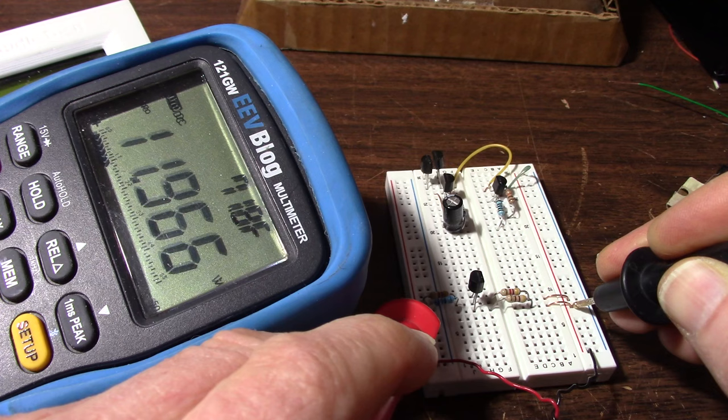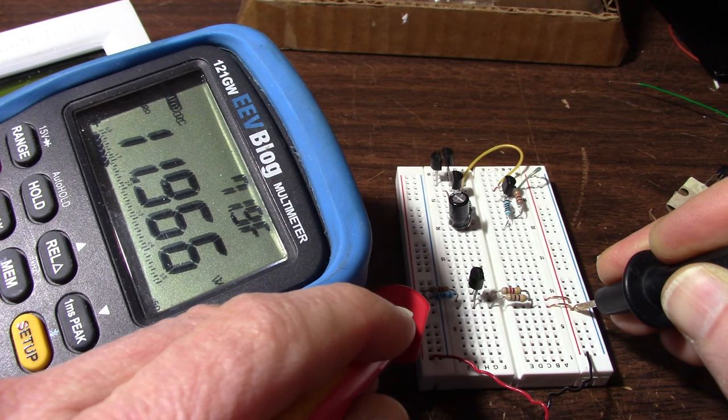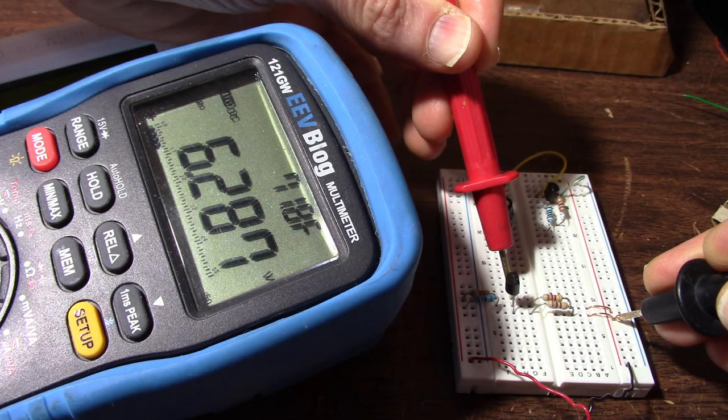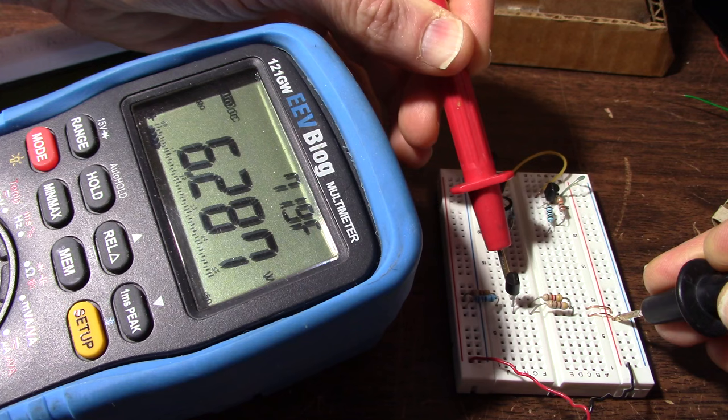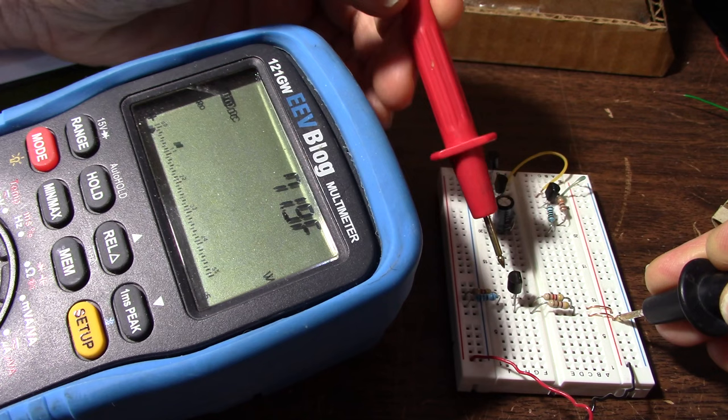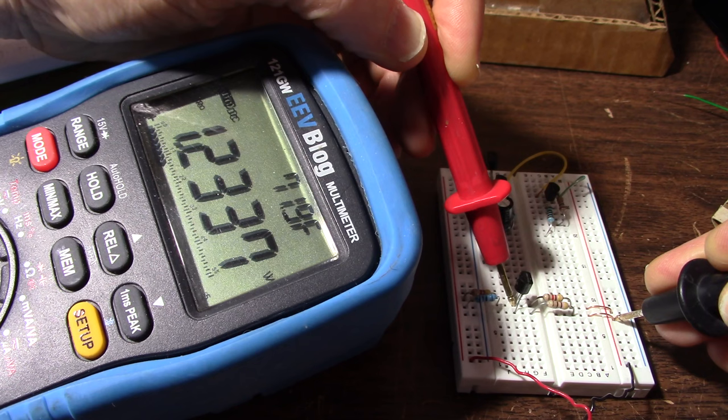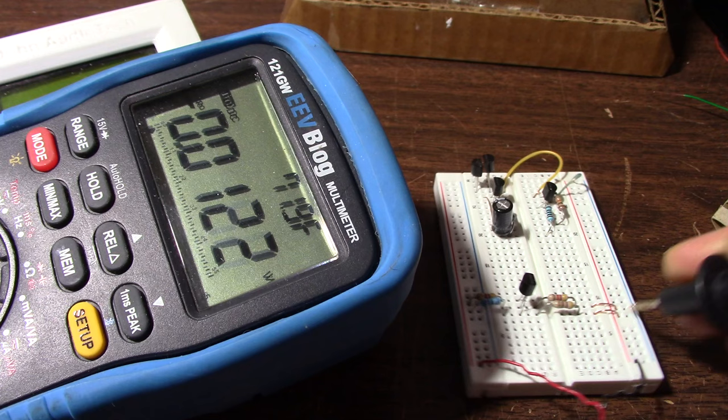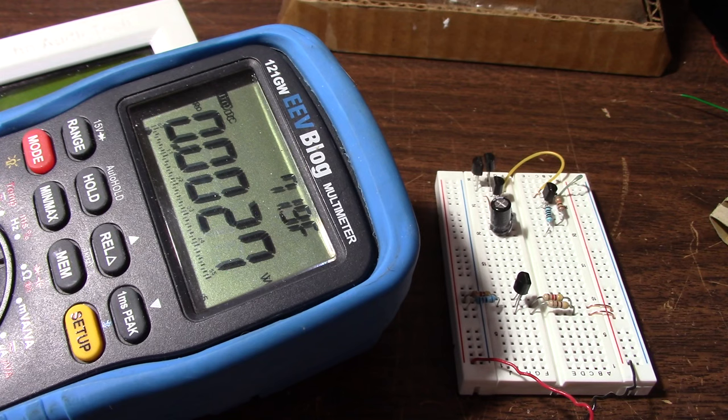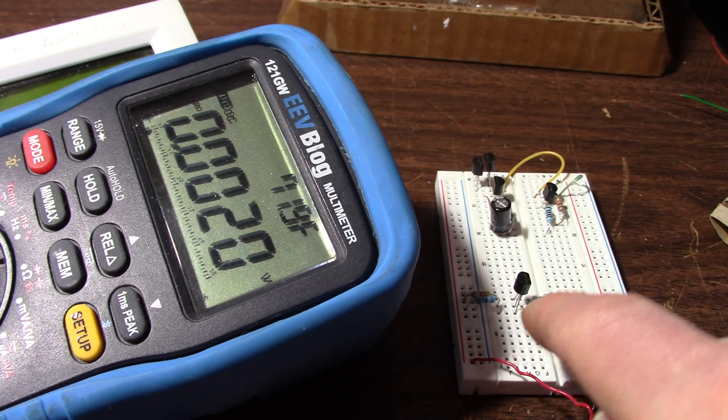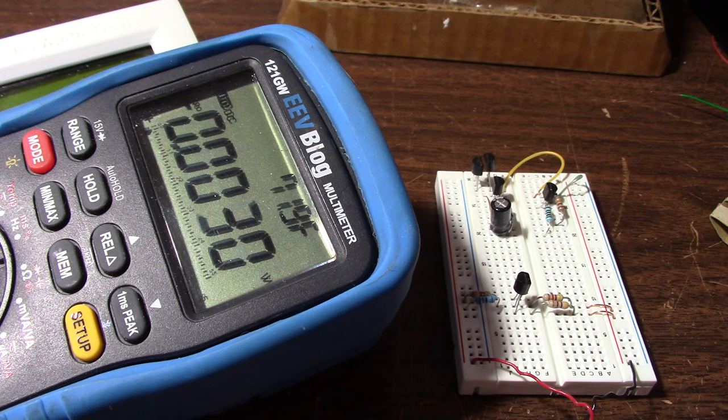That's close enough to 12. Let's measure the collector voltage. Look at that. Very close to the 6 volts we wanted. That's very good. I'm kind of curious of the base voltage. That is 1.23. What did we calculate there? 1.26. I'd say we did pretty good there. And we know that the currents are going to be pretty similar because of the voltages we measured due to the resistances used.